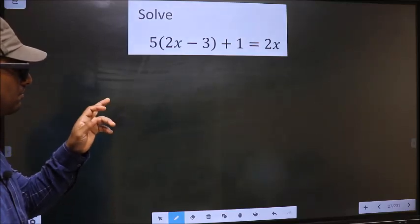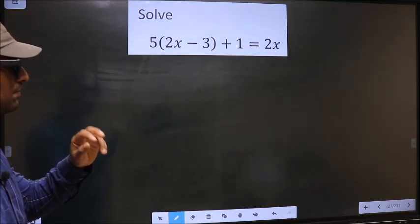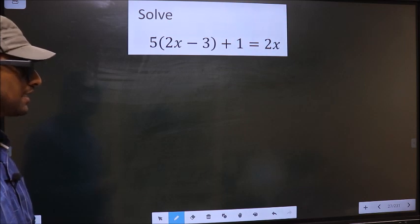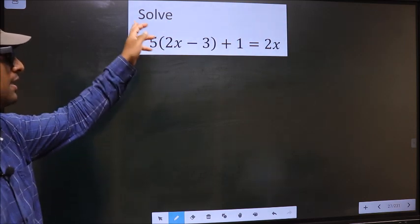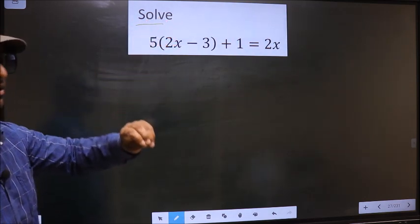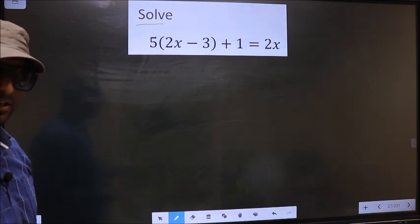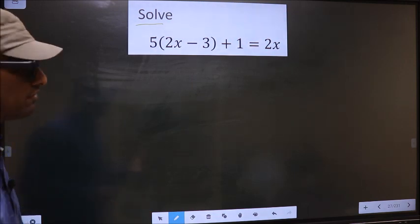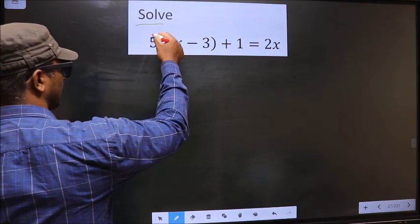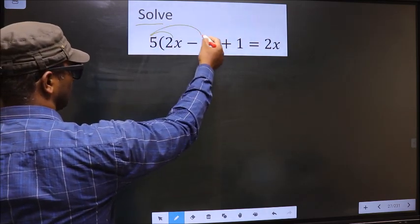Solve 5 brackets 2x minus 3 plus 1 equal to 2x. Here they told us to solve, means we should find the value of x. For that, first we should open up this bracket in this way.